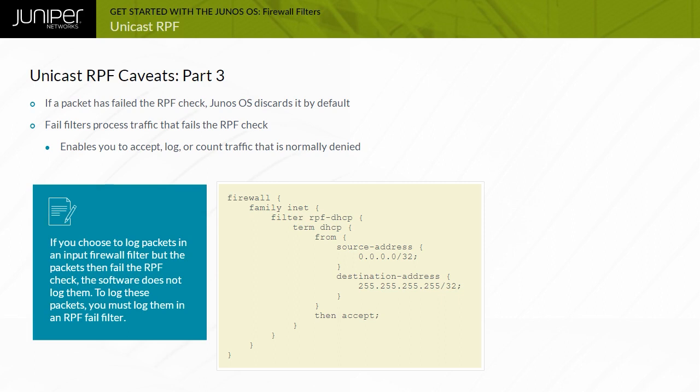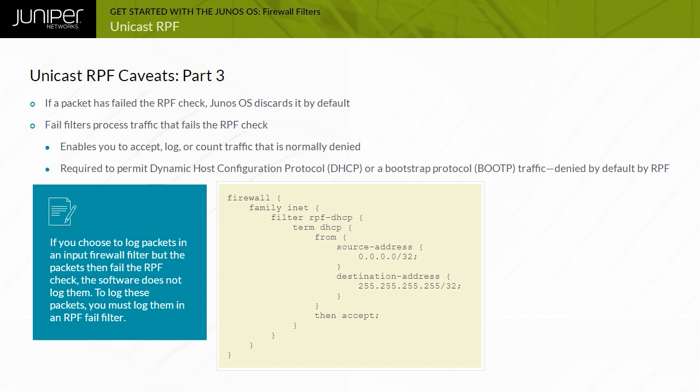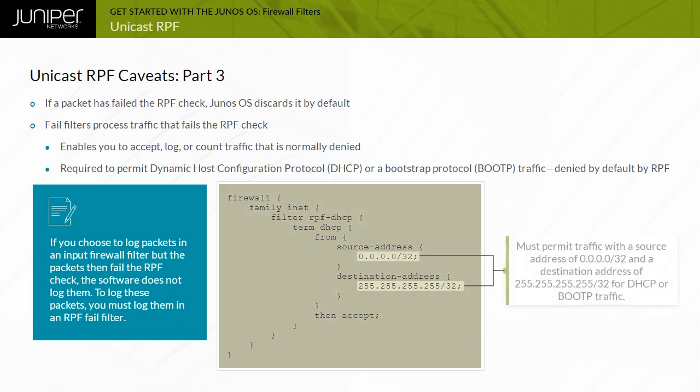On most devices running Junos OS, DHCP and Bootstrap Protocol (BootP) requests fail the RPF checks. To enable these requests, you must configure a fail filter that permits traffic with a source address of default and a destination address of 255.255.255.255. This code shows a sample fail filter to include DHCP and BootP requests.